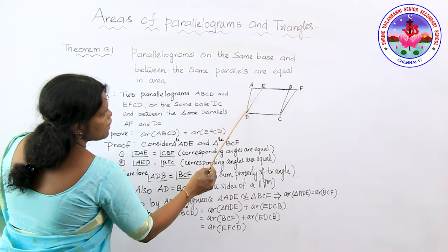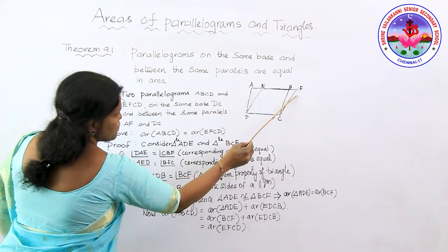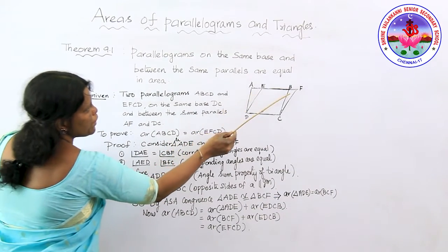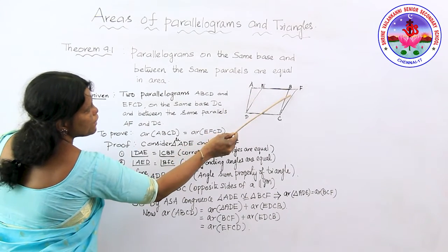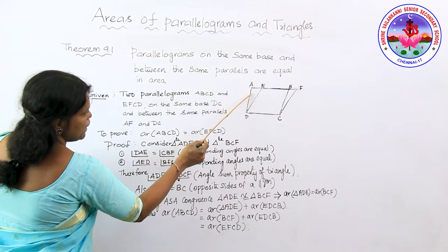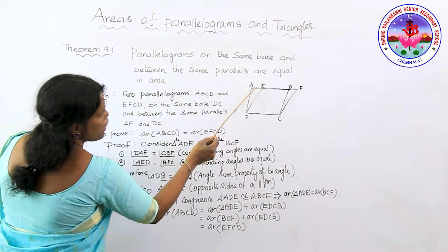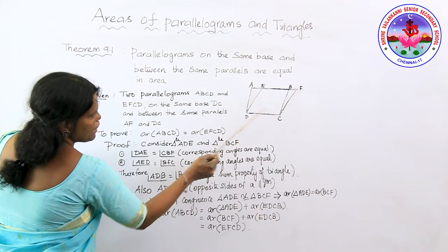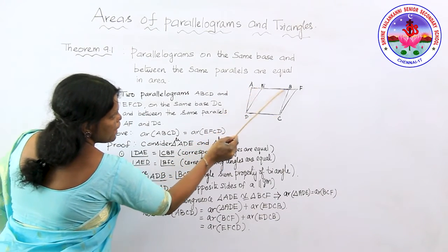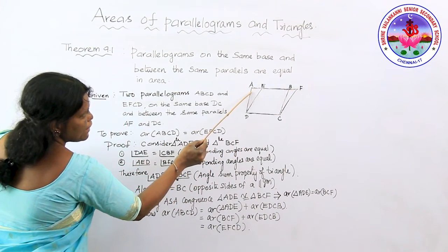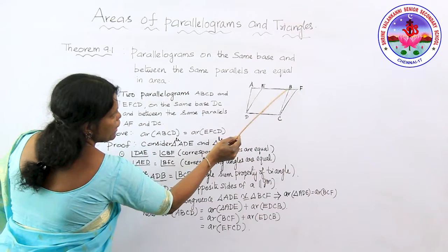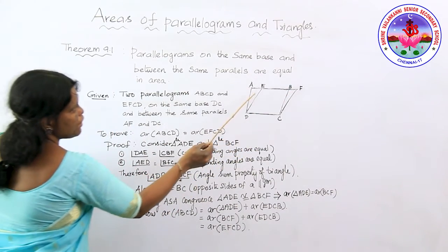Consider triangle ADE and triangle BCF. We are going to select the congruence criteria to prove the two triangles congruent. I have taken angle DAE and angle CBF. In parallelogram ABCD, AD is parallel to BC, and if I consider AF as a transversal, I can say that angle DAE is equal to angle CBF — these are corresponding angles.